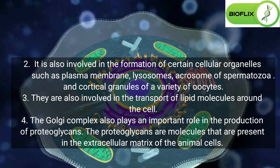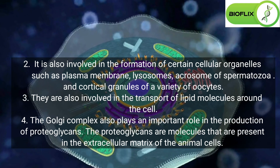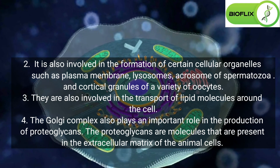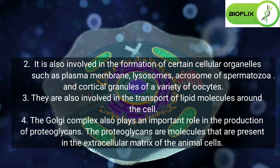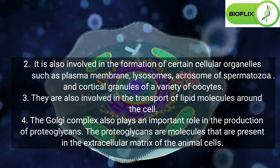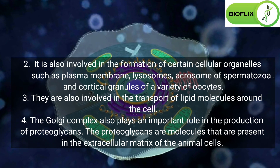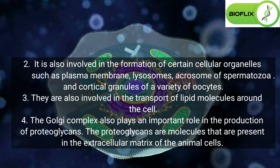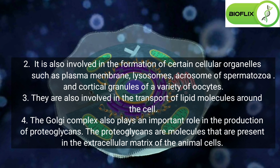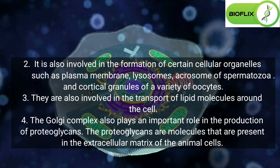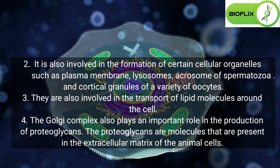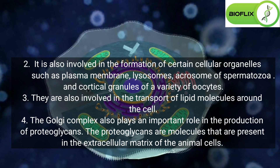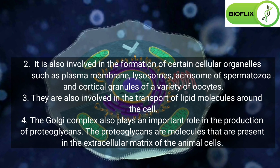Golgi is also involved in the formation of certain cellular organelles such as plasma membrane, lysosomes, acrosome of spermatozoa, and cortical granules of a variety of oocytes. They are also involved in the transport of lipid molecules around the cell. The Golgi complex also plays an important role in the production of proteoglycans, which are molecules present in the extracellular matrix of animal cells.